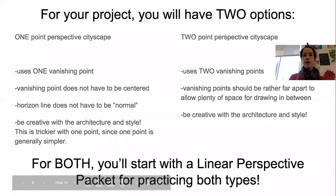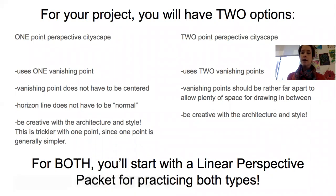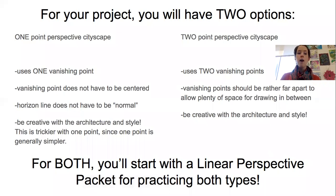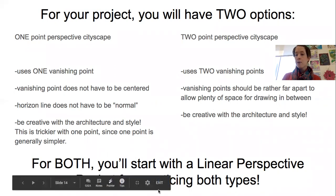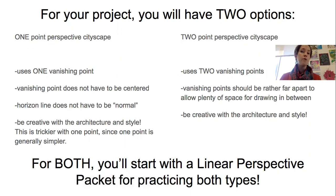You will be able to pick whether you do one point perspective or two point perspective. Remember, one point uses one vanishing point and two uses two. The preliminary descriptions and rules are just to help you figure out exactly what your cityscape has to have. Before you start planning and sketching your city, we're going to practice using both types of linear perspective. You will have practice pages tomorrow. If you are virtual or remote and cannot print your practice pages, you can hold paper up to the computer and trace over pages two and four of the document.